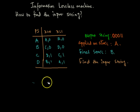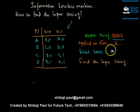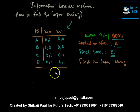In this tutorial I'm going to show you how to find the input string for an information lossless machine if the output string, the initial state, and the final state are given. The output string is 00011, applied with initial state A and the final state B. We need to find the input string corresponding to this output string. First, we need to test whether the given machine is indeed an information lossless machine, because only then can we find the input string.